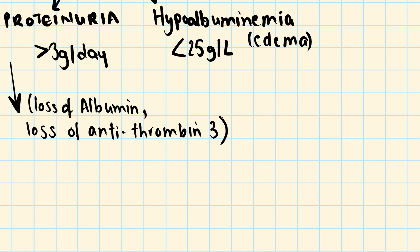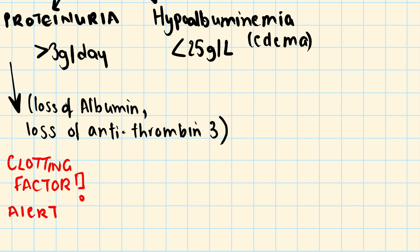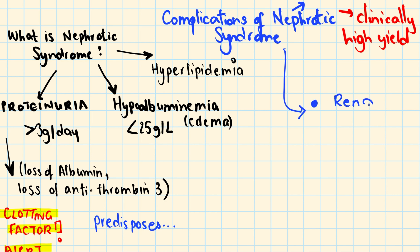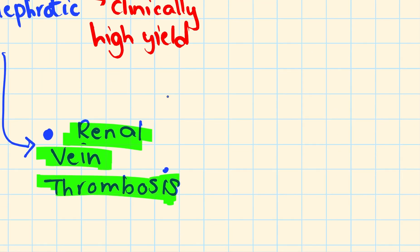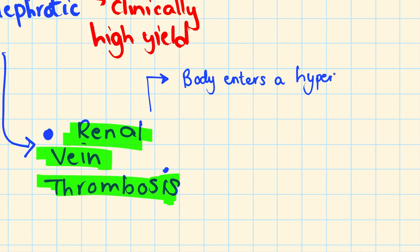This is crucial for understanding why a certain thrombosis occurs — because you are losing your antithrombin 3, your anticoagulant protein. If you lose your anticoagulant protein, you are more likely to have activation of those clotting factors and more likely to activate your coagulation. Your first complication is renal vein thrombosis. The renal vein is in fact the most common site for thrombosis to occur.